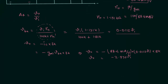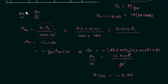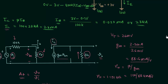Dividing both sides by Vi, Vo divided by Vi equals minus 2.970. Since Vo over Vi is the voltage gain AV, the voltage gain of the given amplifier circuit is equal to minus 2.970. This is the answer, and this is how we use the hybrid pi model as the transistor equivalent circuit.